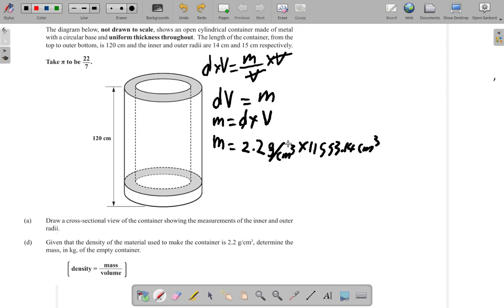Now you notice that the cm³ here - this is grams per cm³, meaning over cm³, it's in the denominator - and the cm³ is in the numerator, so cm³ cancels cm³ and mass in grams remains. I just did that to show that the units would work out as well. So the mass is going to be 2.2 multiplied by 11553.14.